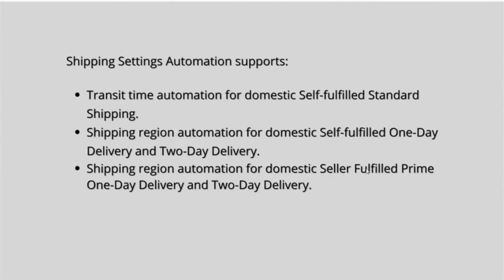Prime or non-prime premium shipping eligible regions are auto-calculated based on where a shipment can reach within one day and two days, using your shipping settings automation preferences including your ship-from locations, your shipping service, and your delivery zone limits.